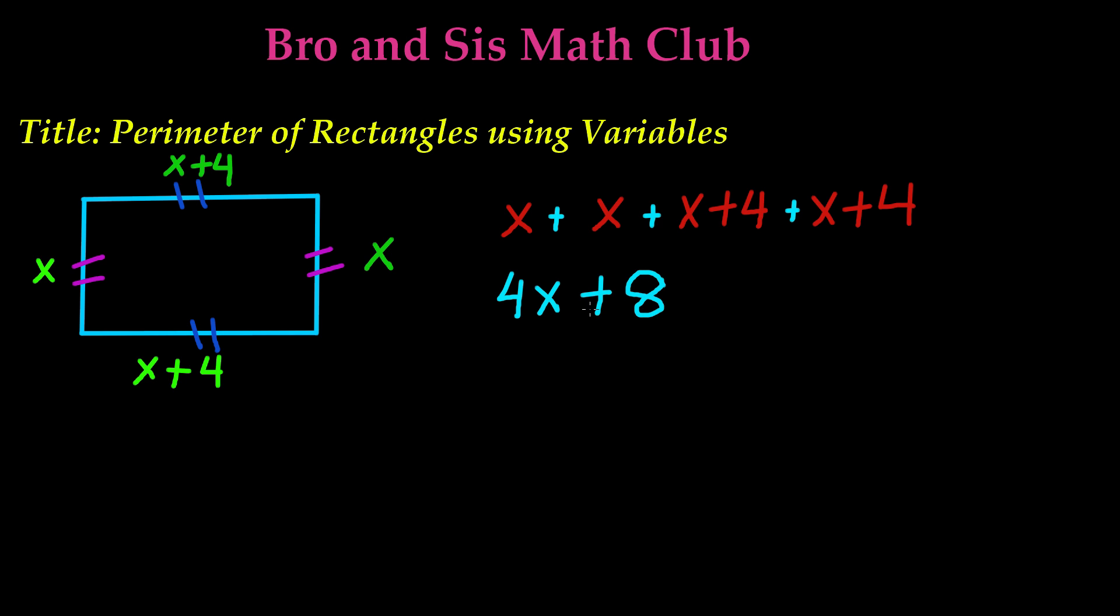So we get 4x plus 8, which is our perimeter. Now, this could be our perimeter, but what if we know the value of x?